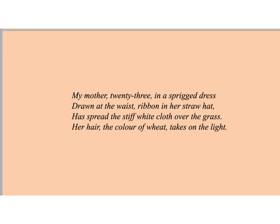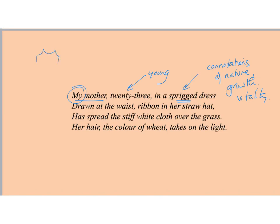Just as we've frozen the father in memory, we also get 'my mother' — if you're comparing this, look at the pronoun defining the relationship. She's young — 23 and 25. 'Sprigged' has connotations of nature and growth, vitality — meaning youth and liveliness. A sprig dress drawn at the waist: imagine a 1950s-style dress drawn in to emphasise a narrow waist, feminine. 'Ribbon in her straw hat' — so this is a special occasion. 'Her hair the colour of wheat' — golden, positive imagery.